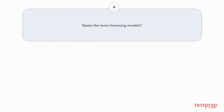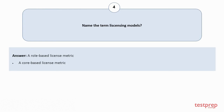Question number 4: Name the termless sensing models. The termless sensing models are: 1. A role-based license metric, 2. A core-based license metric.